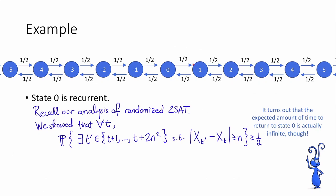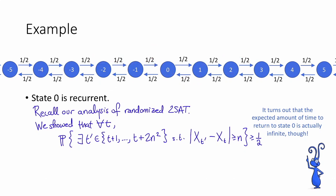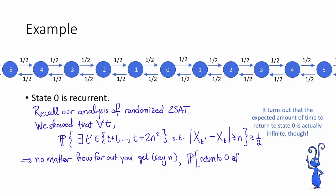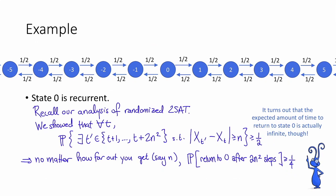That is, if we start at some point t and wander for about 2n² steps, then with decent probability we'll have wandered at least n away from where we started. What that means for this example is that no matter how far out you get — say n — there's always some decent probability of returning to 0. In particular, the probability that you return to 0 after 2n² steps is greater than or equal to 1/4. The reason for 1/4 rather than 1/2 is that it's equally likely we would wander off in the other direction instead of back to 0.